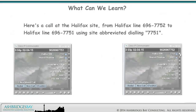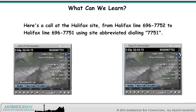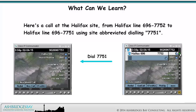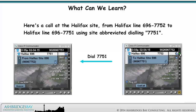Here's a call at the Halifax site from Halifax Line 696-7752 to Halifax Line 696-7751 using site abbreviated dialing. Extensions can be 4 digits or 5 digits depending on the site.